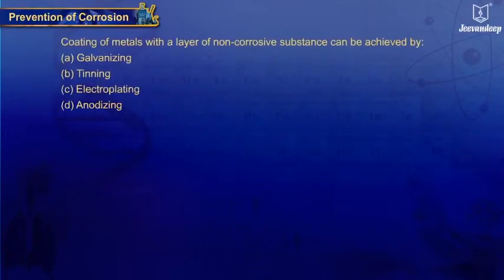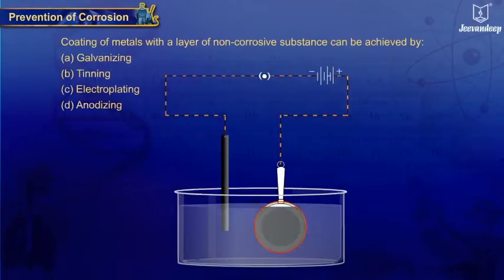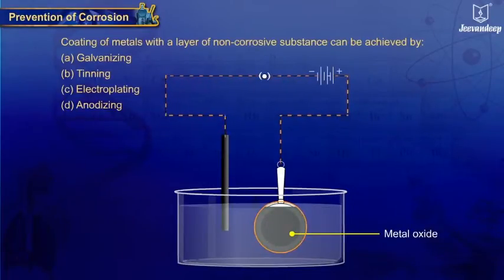(d) Anodizing - this is a process of forming a thick, strong layer of metal oxide on the surface of metals, preventing them from corrosion, for example copper and aluminium.